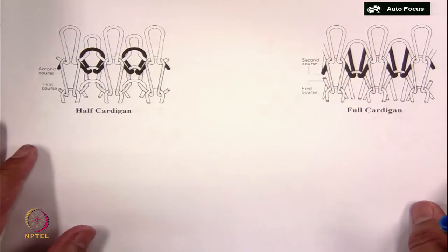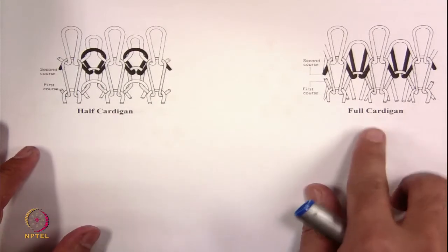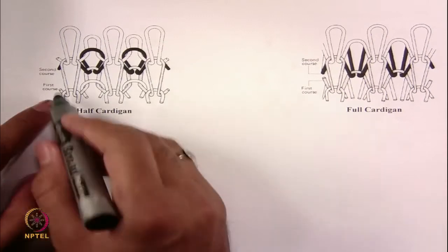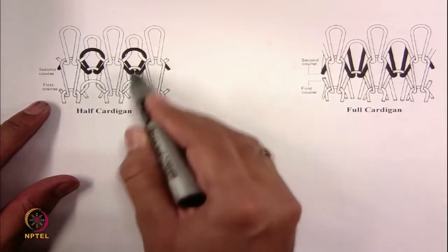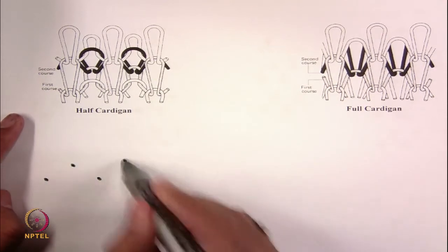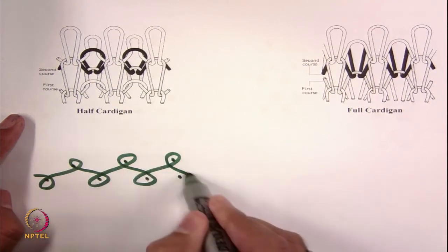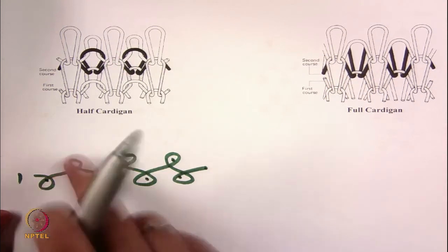Designs are unlimited, so let's focus on some of the common market designs popular in sweaters and t-shirts. These designs belong to cardigan and half cardigan families, which you will find most popular in the market. One belongs to half cardigan and the other to full cardigan. If you see the movement of yarn: in the first course, all needles are knitting on both beds.